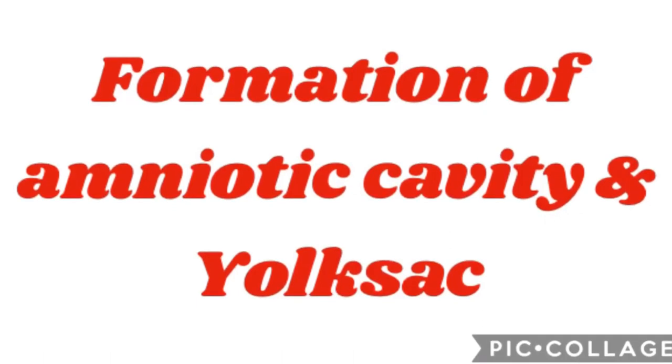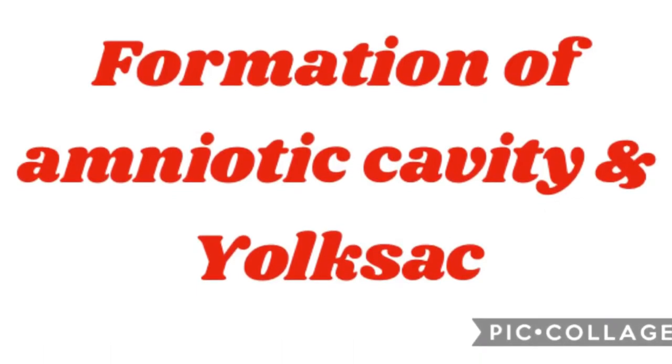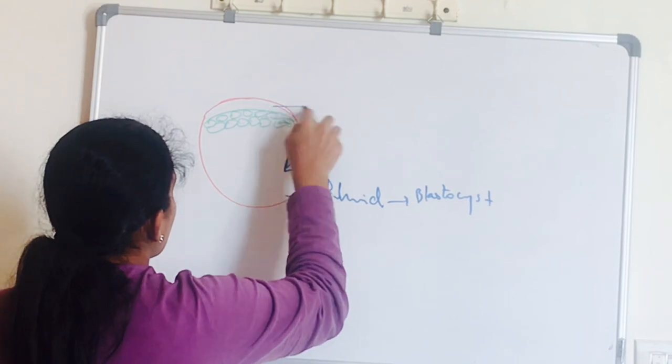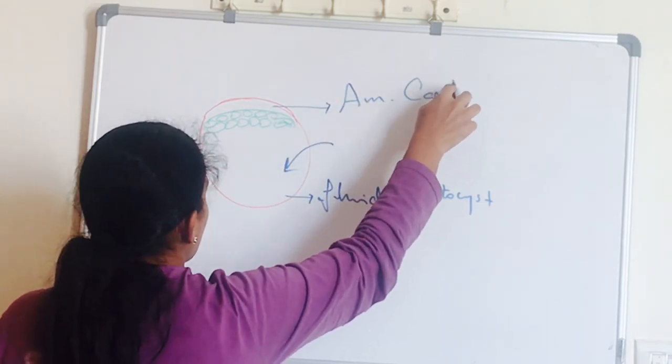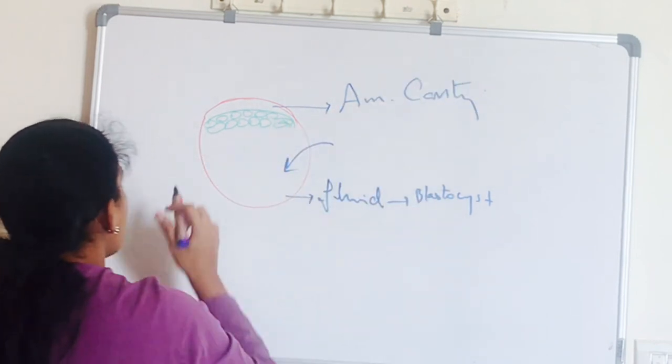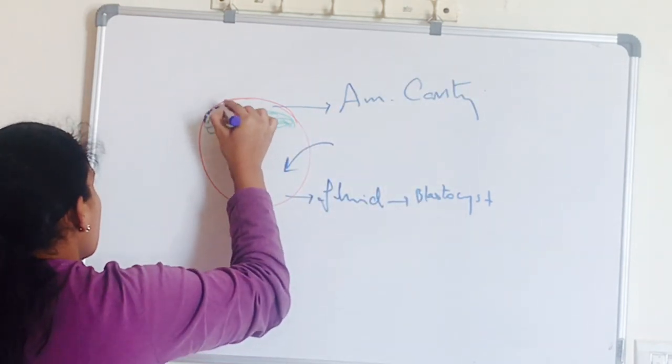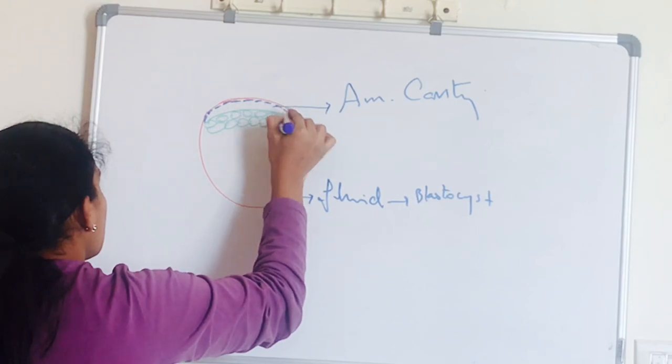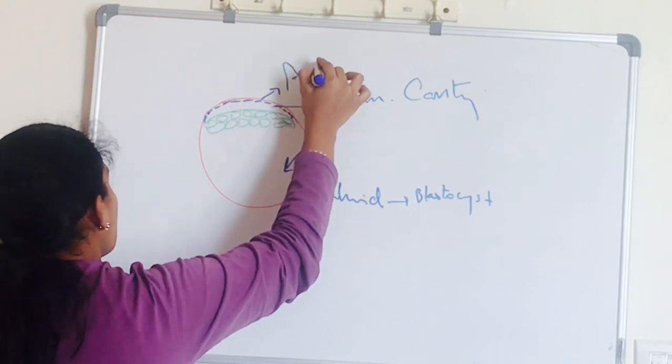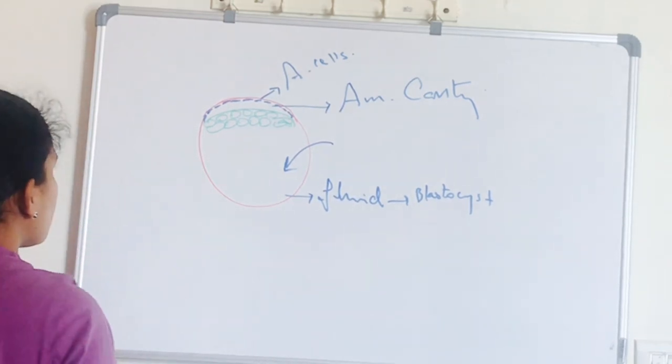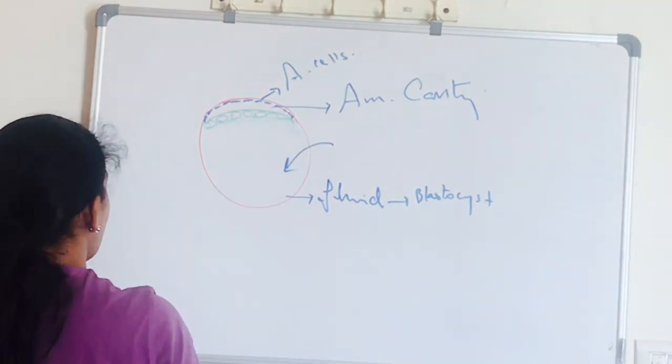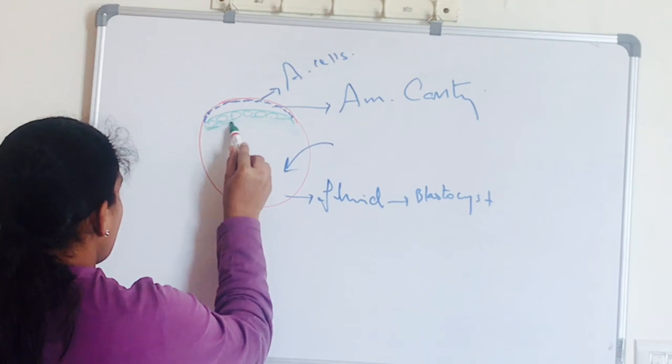Formation of amniotic cavity and yolk sac. A space appears between the trophoblast and the upper layer of embryonic cells, those are called epiblast, and the roof of this amniotic cavity is lined by amniogenic cells. These cells are derived from the trophoblast, whereas the floor of the cavity is lined by the epiblast cells.